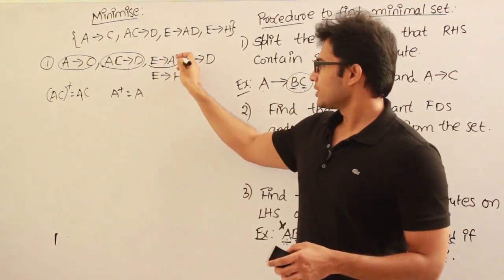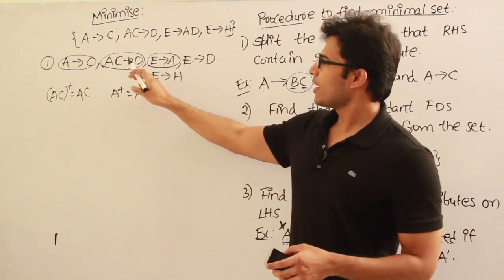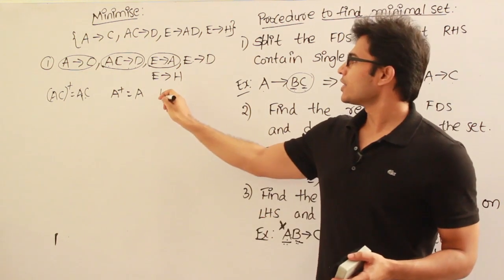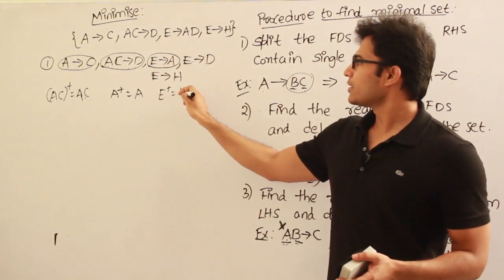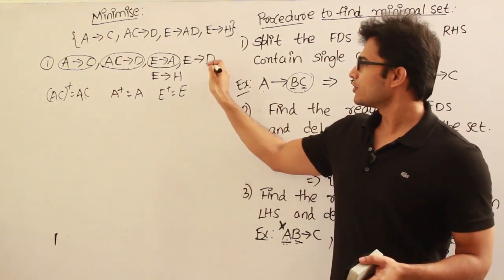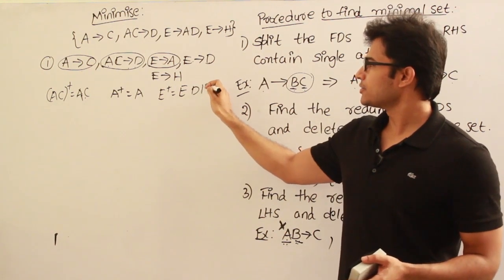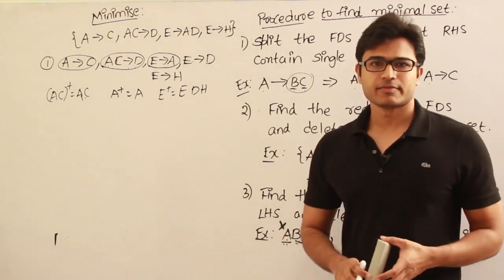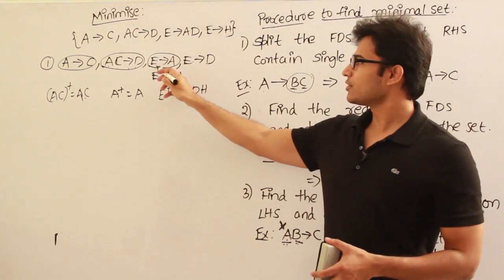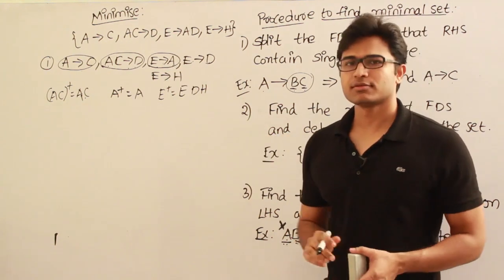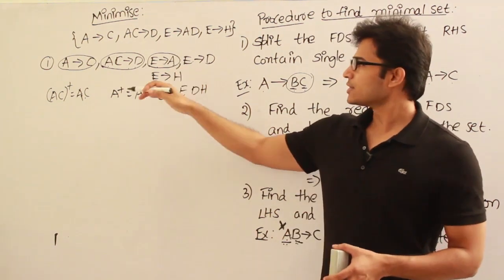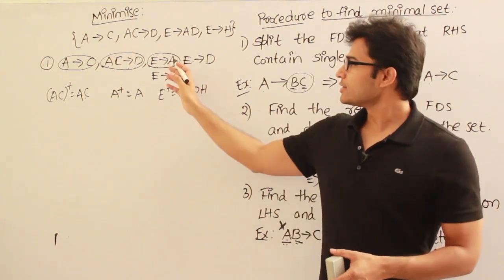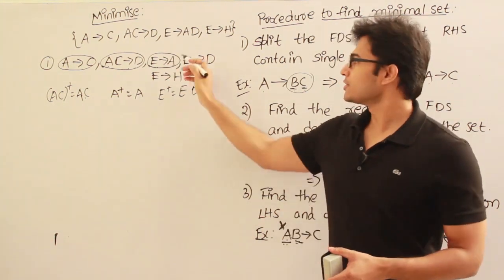Now take E→A and delete it. In the remaining productions, check if A appears in E+. E+ contains E, and because of E we get D and H, but there is no way to get A. In fact, A is not present as the right hand side of any other production. So there is no way to determine A unless it is on the left hand side. Therefore E→A is required.